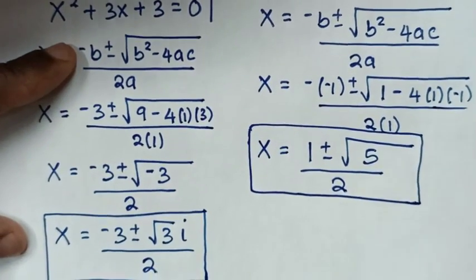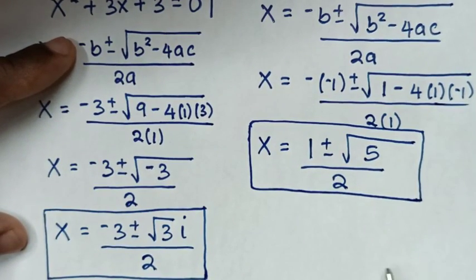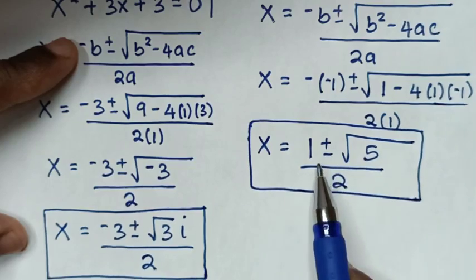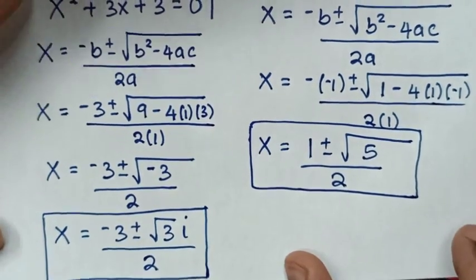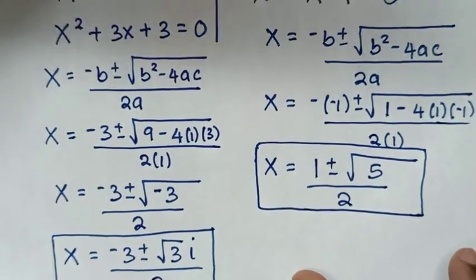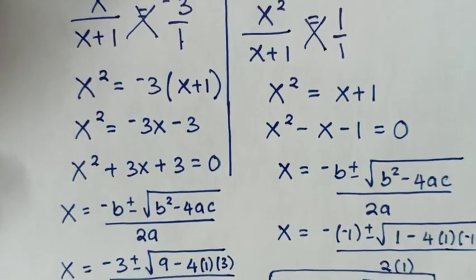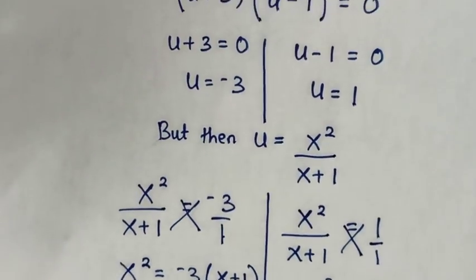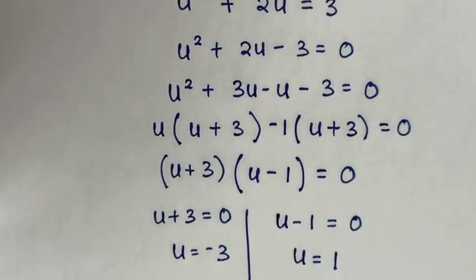So we have 4 values of x, because of the plus or minus in each solution. Thank you for watching — don't forget to subscribe to my channel, and see you in the next video. Bye bye.